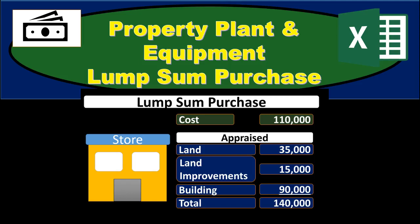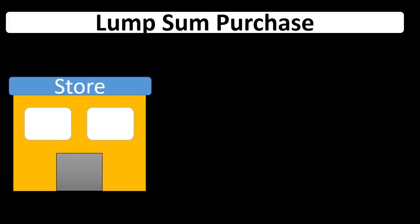In this presentation we will discuss lump sum purchases as it relates to property, plant, and equipment. When we purchase something like a building, we typically have one lump sum purchase for more than just the building, because the building is on the land and if we're including the land, we purchased the land with the building.